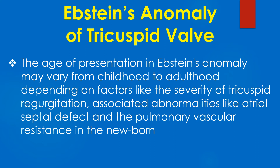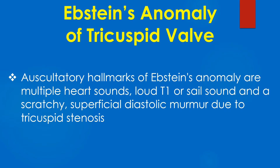The age of presentation in Ebstein's anomaly may vary from childhood to adulthood depending on factors like the severity of tricuspid regurgitation, associated abnormalities like atrial septal defect, and the pulmonary vascular resistance in the newborn. Auscultatory hallmarks include multiple heart sounds, a loud T1 or sail sound, and a scratchy superficial diastolic murmur due to tricuspid stenosis.